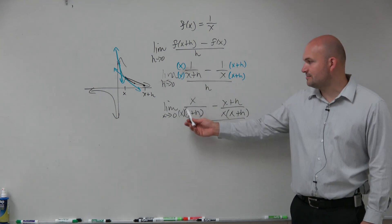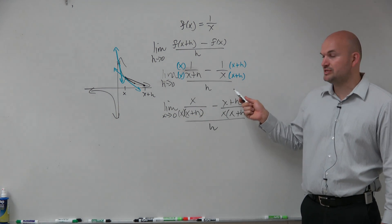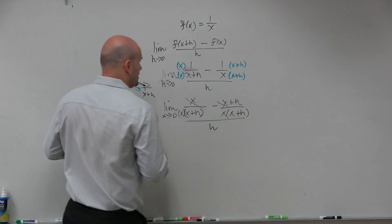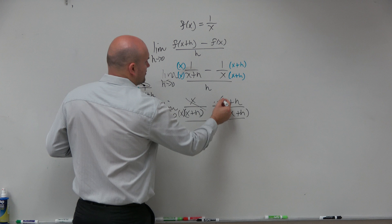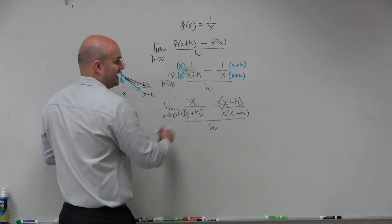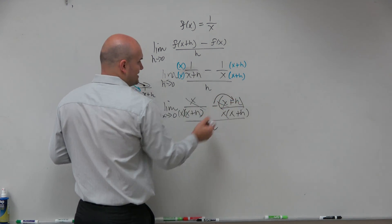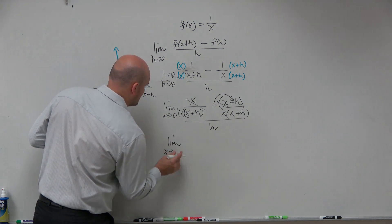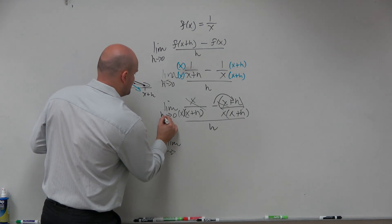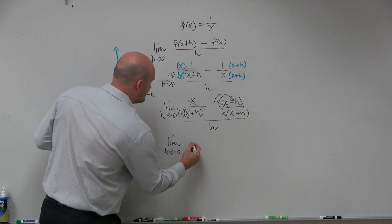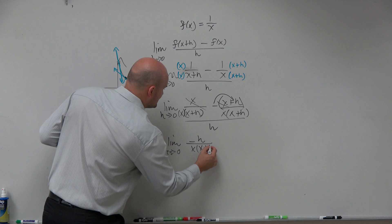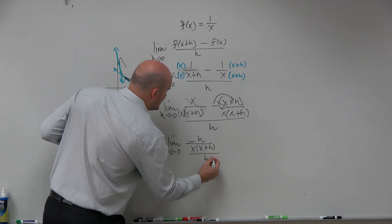So now what happens when I combine these? I get x minus x, which is 0. And then I have, remember you're subtracting both the x and the h. So that's minus x and that's minus h. So therefore I'm left with limit as h approaches 0 of negative h over x times x plus h all over h.